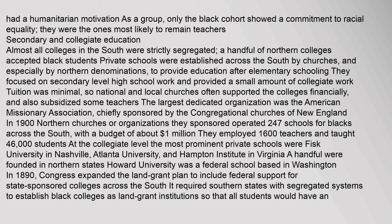Almost all colleges in the South were strictly segregated; a handful of Northern colleges accepted black students. Private schools were established across the South by churches, especially by Northern denominations, to provide education. After elementary schooling they focused on secondary and high school work and a small amount of collegiate work. The largest dedicated organization was the American Missionary Association, chiefly sponsored by the Congregational Churches of New England. In 1900 northern churches or organizations they sponsored operated 247 schools for blacks across the South, with a budget of about $1 million, employing 1,600 teachers and teaching 46,000 students.